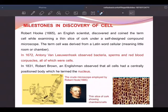In 1672, Antony van Leeuwenhoek observed bacteria, sperms, and red blood corpuscles, all of which were cells. In 1831, Robert Brown, an Englishman, observed that all cells had a centrally positioned body which he termed the nucleus.